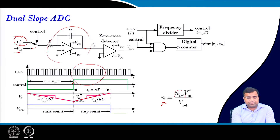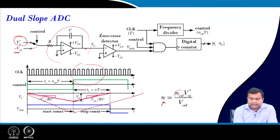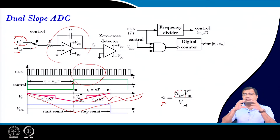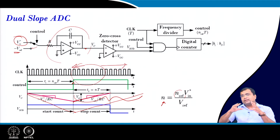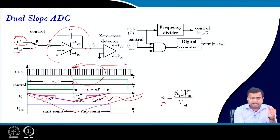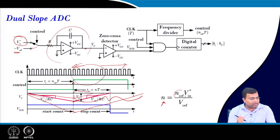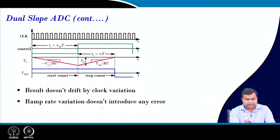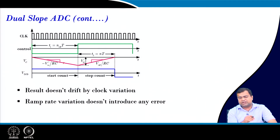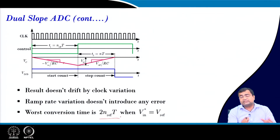The conversion depends on the number of clock cycles: N times V_in over V_ref gives the digital number — that is, how many clock cycles it takes. If you have a higher input voltage, it will go further down and take longer to rise back, resulting in a larger count and a higher equivalent digital number. The advantage is that if there is some drift in the clock, it will not drastically affect the result, and RC time constant variation does not introduce significant error, since it ultimately maps V_in to V_ref.